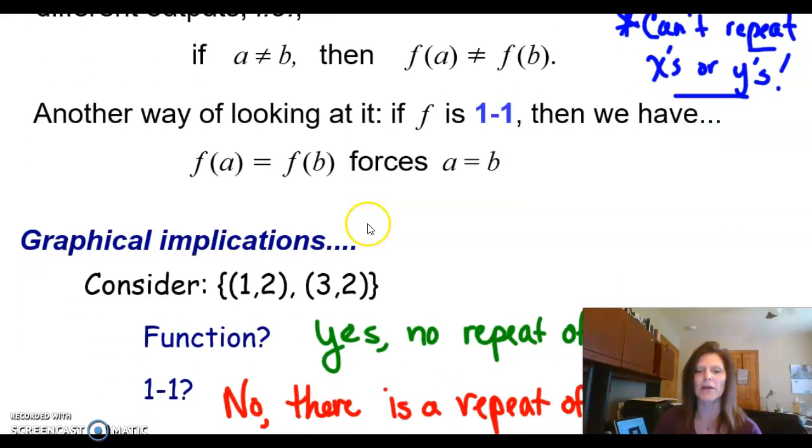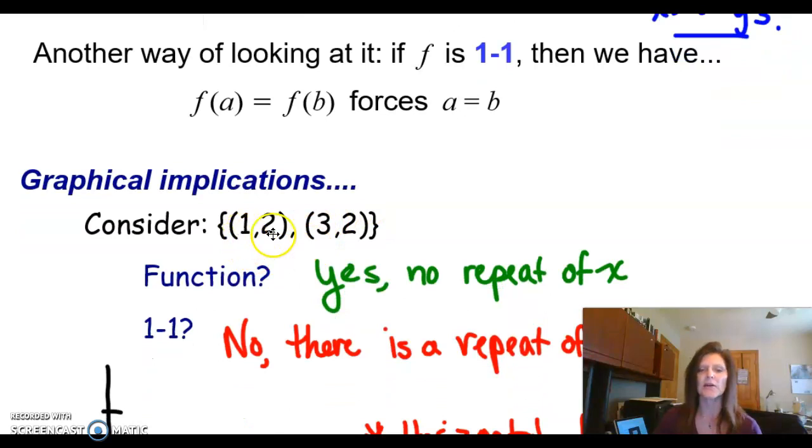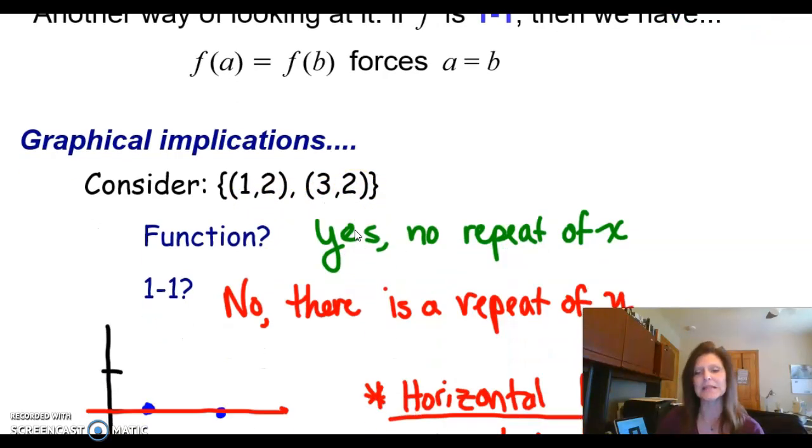I want to take a look at the graph here. In this case, I have a relation (1,2) and (3,2). The x's are not repeated, so it does qualify as a function, but since the y's repeat, it is not a one-to-one function.